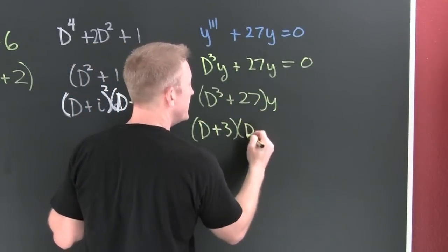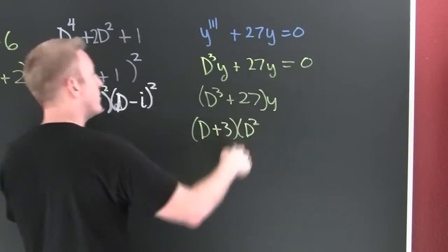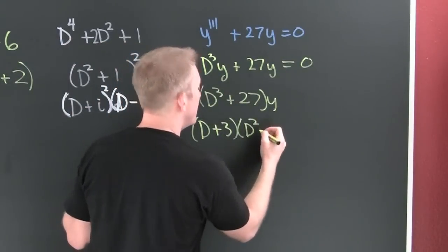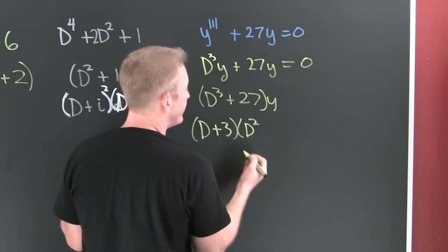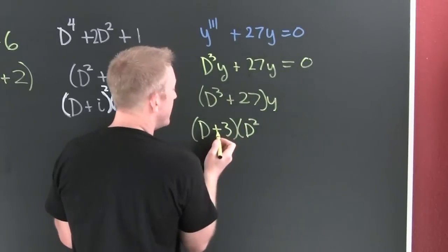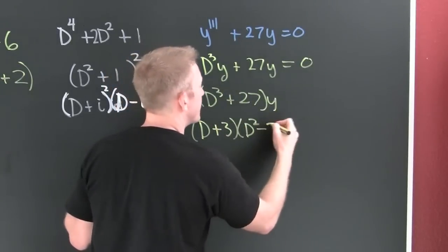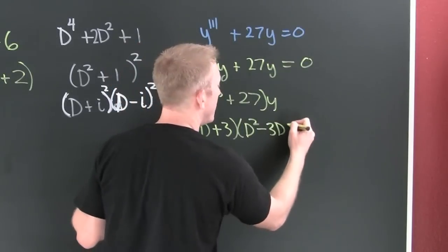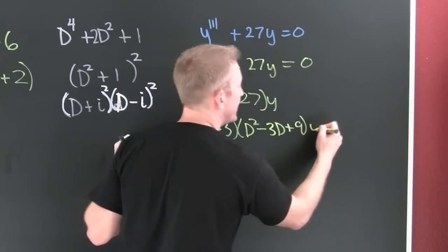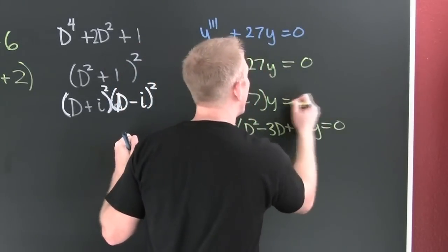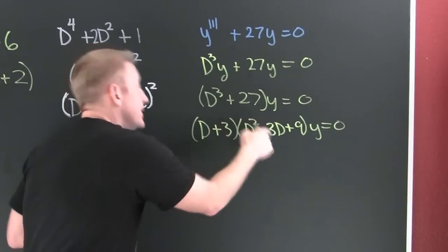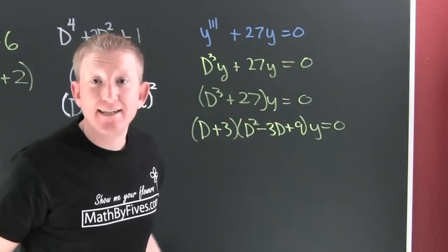This is going to be D plus three times D to the second derivative, and then same opposite three D, always positive, plus nine, acting on y.